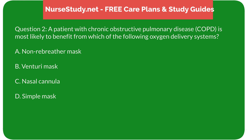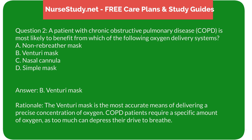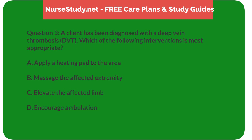Question 2: A patient with chronic obstructive pulmonary disease (COPD) is most likely to benefit from which of the following oxygen delivery systems? A) Non-rebreather mask, B) Venturi mask, C) Nasal cannula, D) Simple mask. Answer: B, Venturi mask. Rationale: The Venturi mask is the most accurate means of delivering a precise concentration of oxygen. COPD patients require a specific amount of oxygen, as too much can depress their drive to breathe.